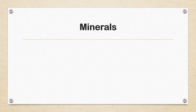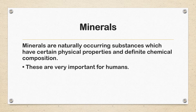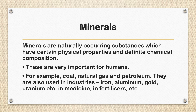Minerals — minerals are naturally occurring substances which have certain physical properties and definite chemical composition. These are very important for humans. For example, coal, natural gas, and petroleum. They are also used in industries — iron, aluminum, gold, uranium, etc. — and in medicine and fertilizers, etc.